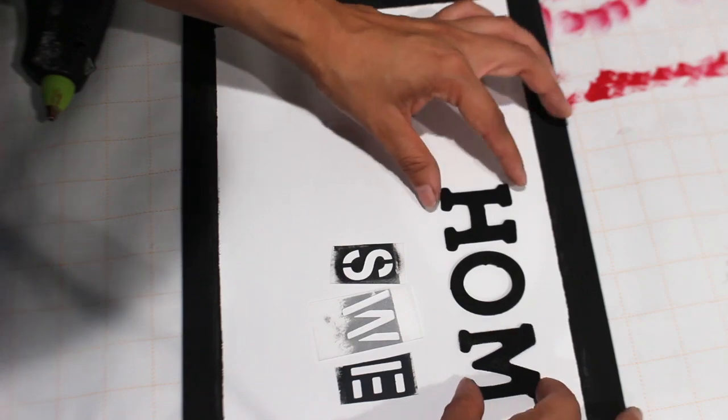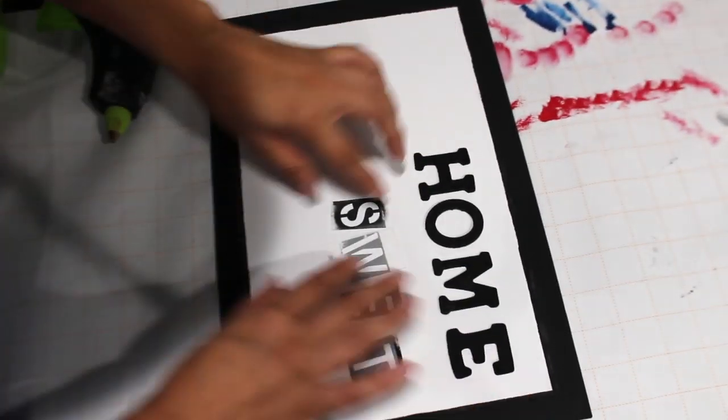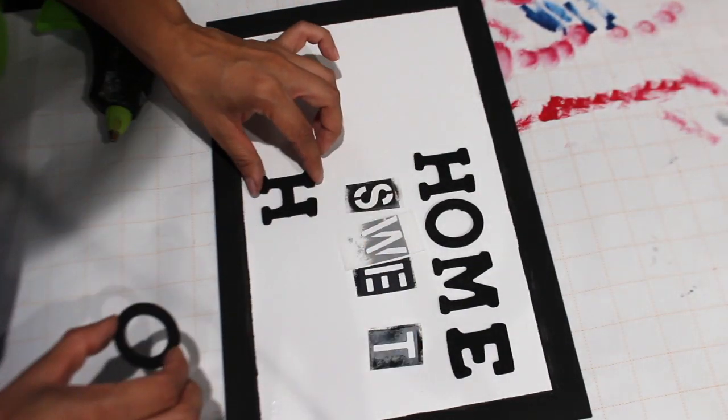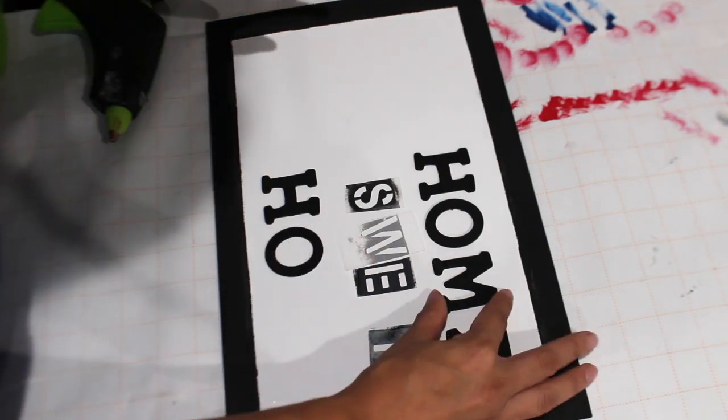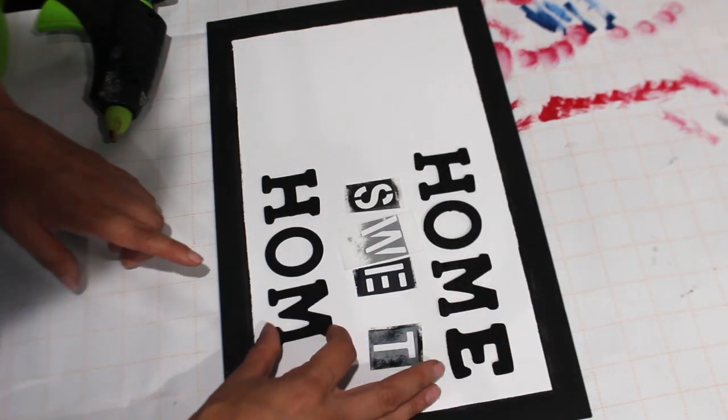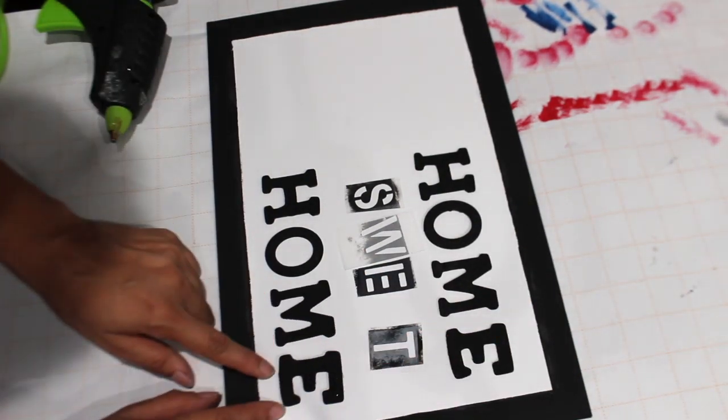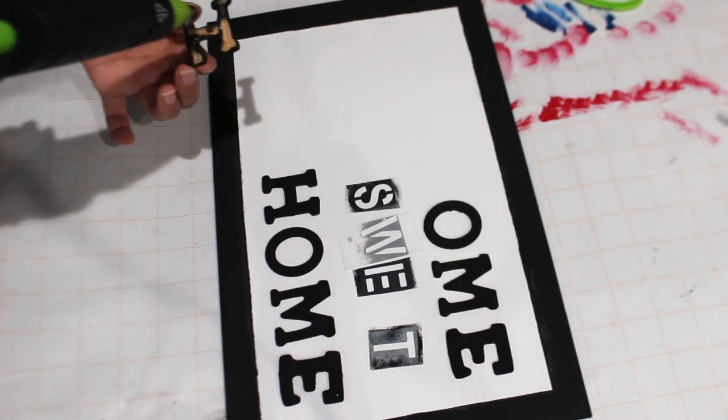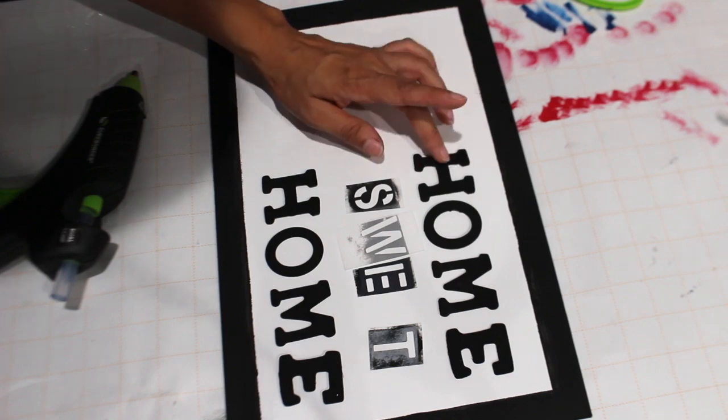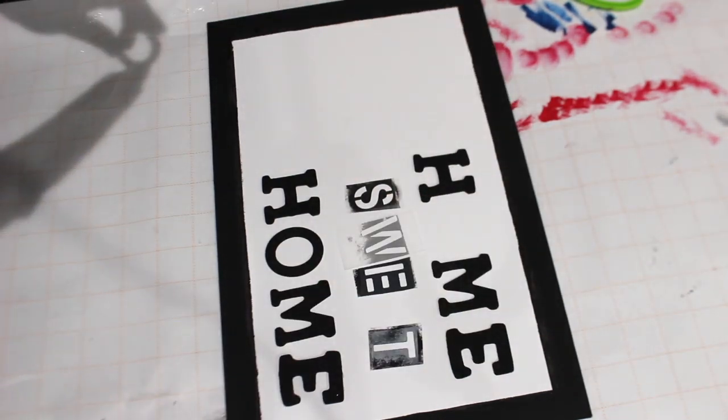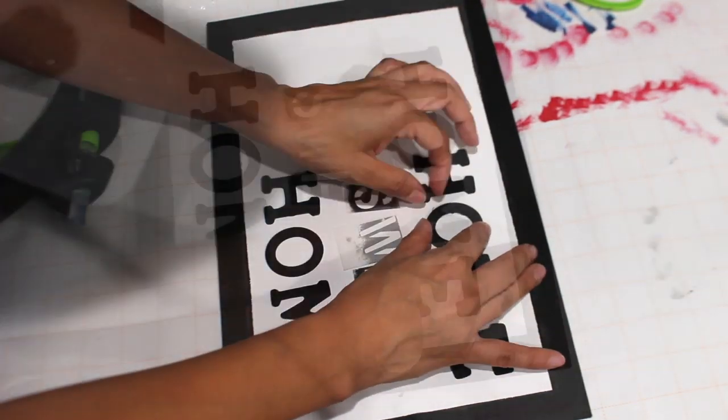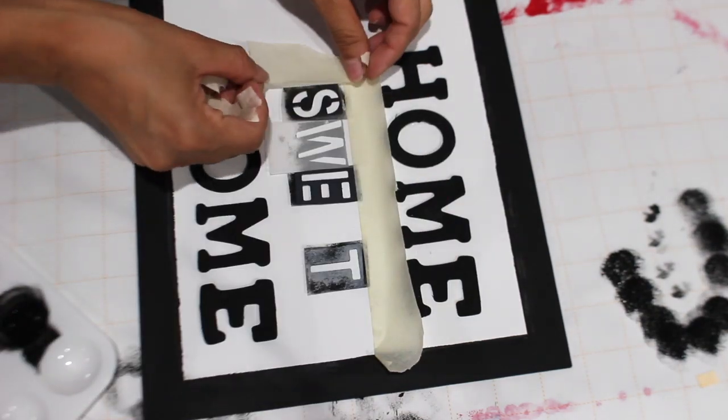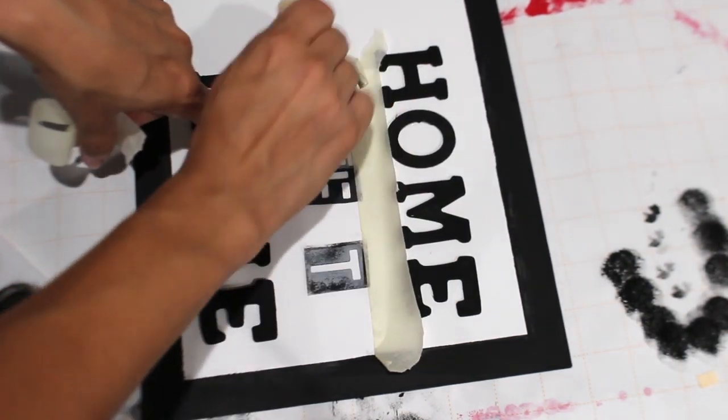All right, so once the black outline is dry, I go ahead and start arranging the home sweet home part of the sign. Then I'm going to be gluing the letters down with my hot glue gun. And I really think the black outline just makes this sign. I really love that. And then you'll see me wipe some of the hot glue onto the paper just because I added a little bit too much.